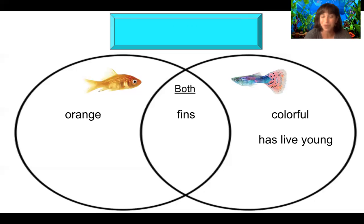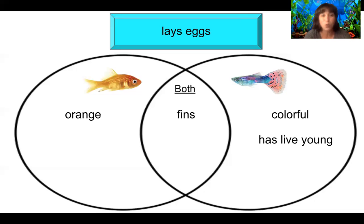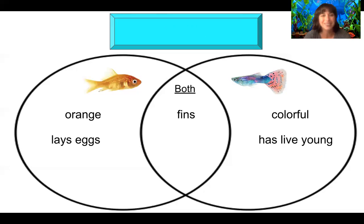Let's take a look at our next one: lays eggs. Scientists, use your pointer power — which fish has babies from eggs? If you said goldfish, you are correct. Goldfish have eggs; guppies have live birth babies.